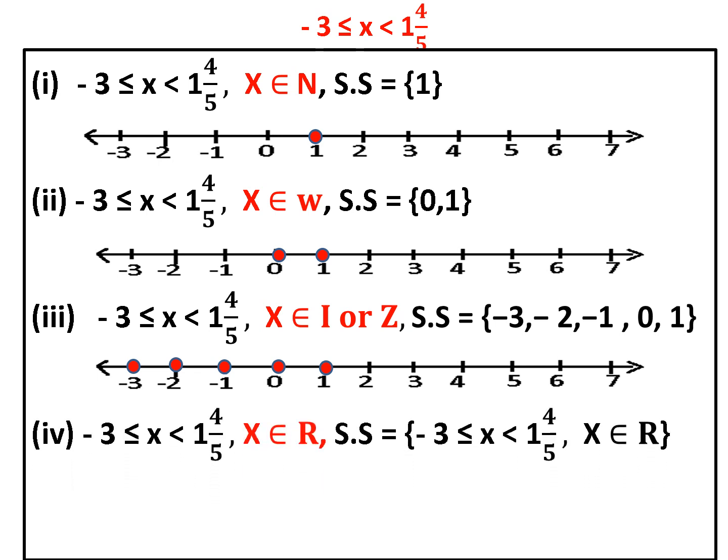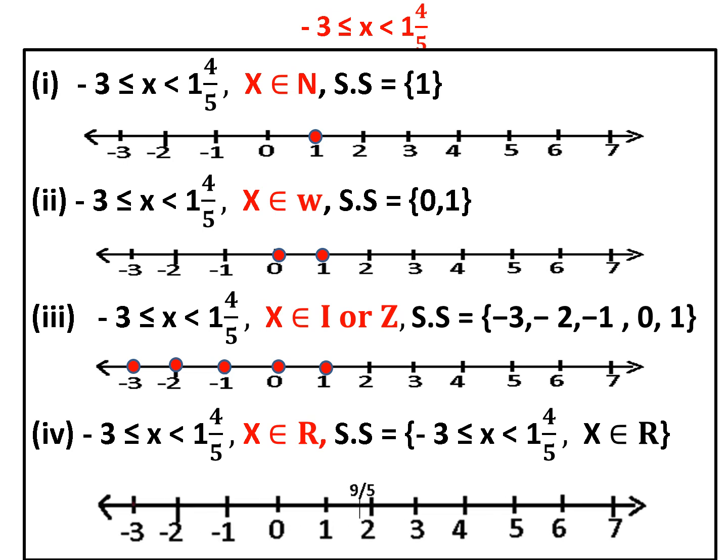Now let us represent the solution for x belongs to R on the number line. All real numbers from minus 3 to 1 and 4 upon 5 form the solution set. On the number line, minus 3 is included since minus 3 is less than or equal to x, so we place a filled dot at minus 3. The second dot is at 9 upon 5, which equals 1 and 4 upon 5, and that dot will be hollow because x is strictly less than 1 and 4 upon 5 — when it is only less than (not less than or equal to), the dot remains hollow. All points between minus 3 and 1 and 4 upon 5 form the solution set.